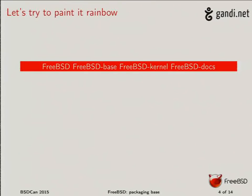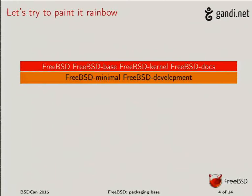If you're only on the base system — for example, installing just a jail and you don't need the kernel — then you have a package called FreeBSD-base. You have the kernel which could be separated, the docs, and we could do other sets like minimal, etc. So for people asking not to split, we can provide the same installation behavior as we have right now. For people wanting a minimal installation, we provide a meta package with only what you need to run your system.